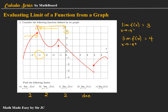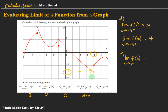For letter E, same process as letter D — we consider the left and right-hand side limits. The limit of f of x as x approaches four from the left: the value being approached is negative three. From the right, the value being approached is negative two. Since the left and right-hand side limits are not equal, the limit of the given function does not exist.